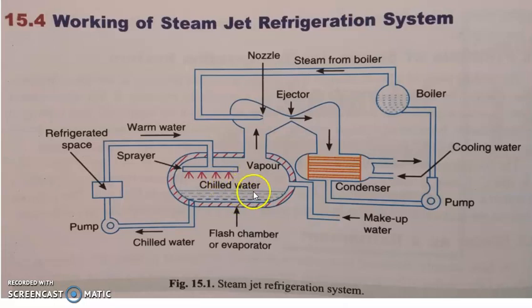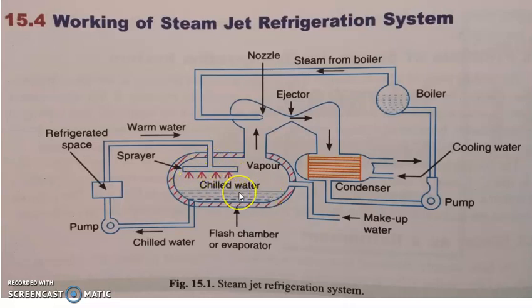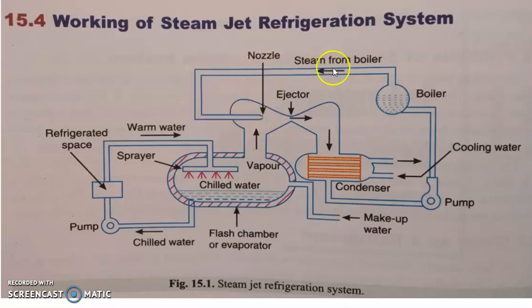This water which is already getting chilled is losing out its heat for this vapor formation. This vapor is getting formed from the warm water which is getting sprayed over the water surface. So, this warm water after getting transformed into vapor will be forced into this section. Here there is another arrangement — a tiny nozzle — through which high velocity steam is admitted from a boiler.